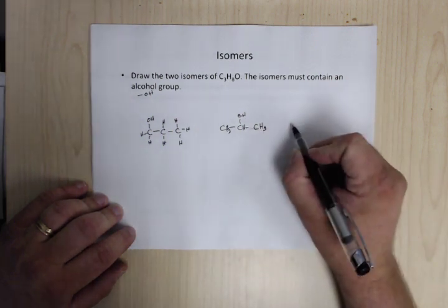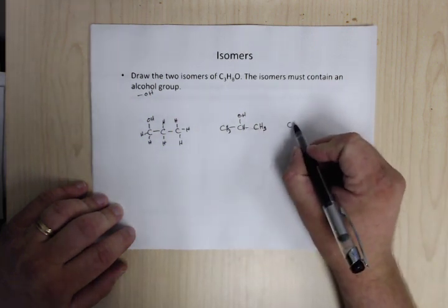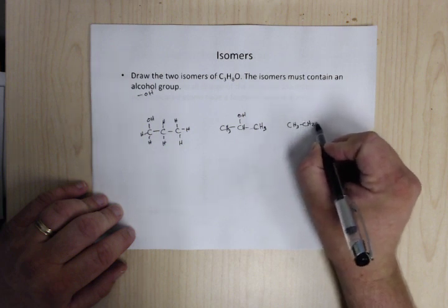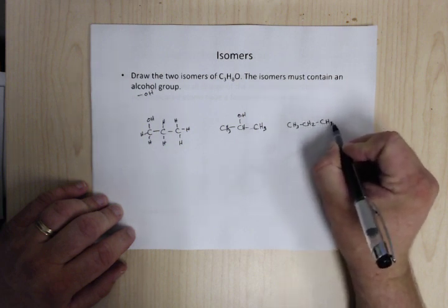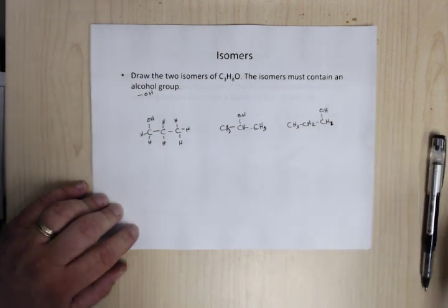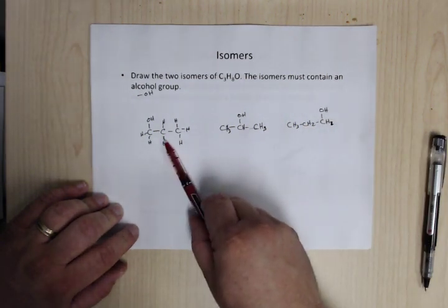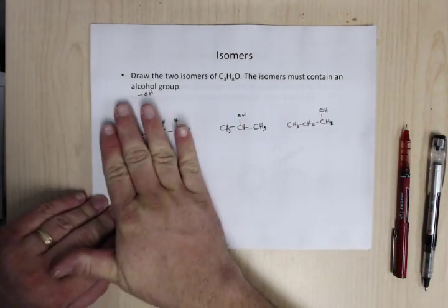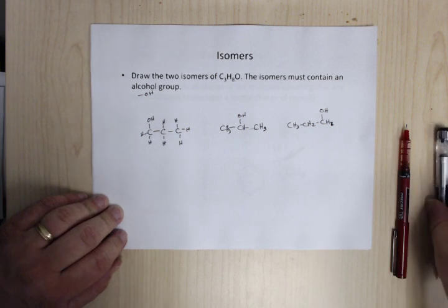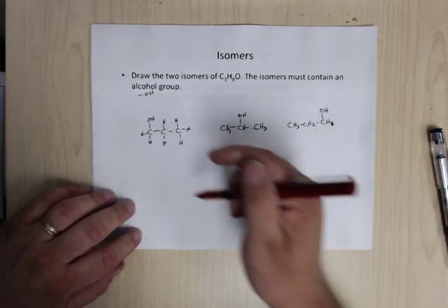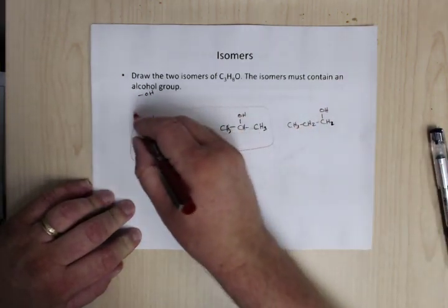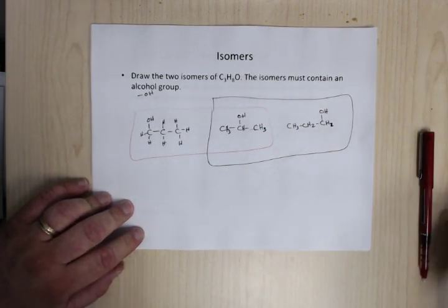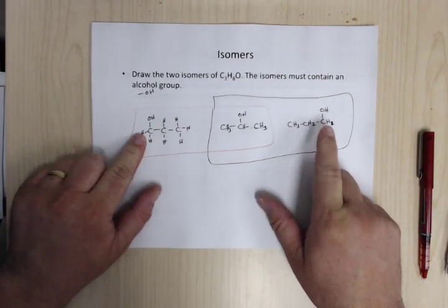But you do have to be careful with these because you don't want to have the OH here because this molecule and this molecule are exactly the same. They have just flipped the molecule over. So you do have to be careful. So the answer would either be these two or it would be these two. I don't care which. Otherwise, you can't have just this and this.